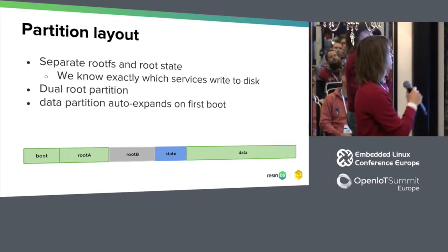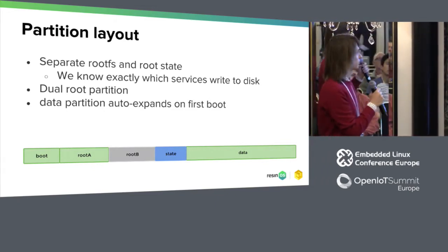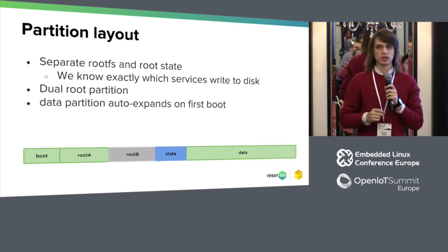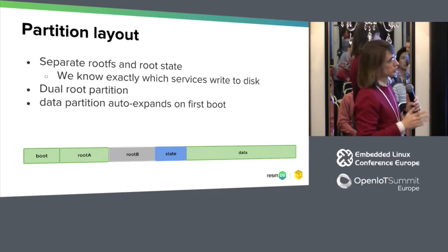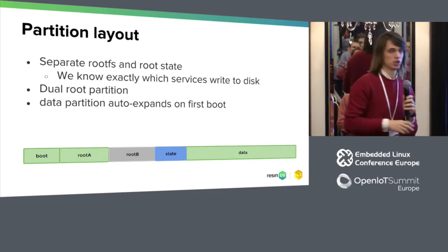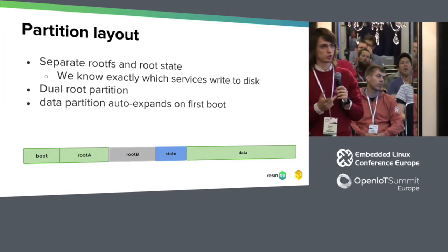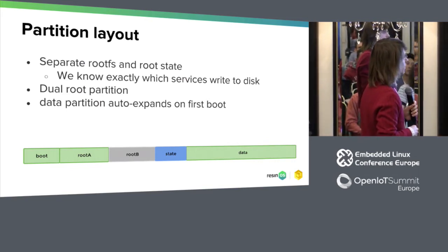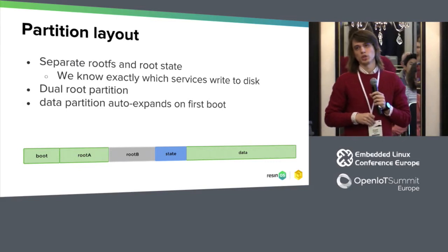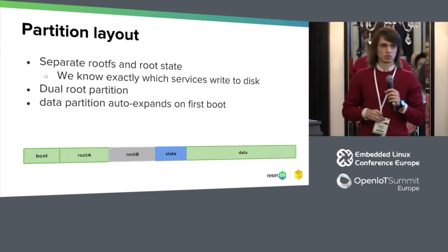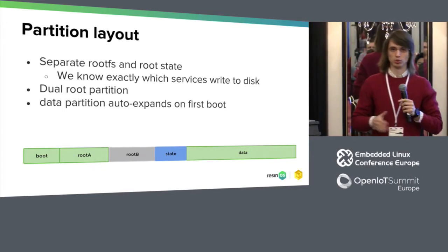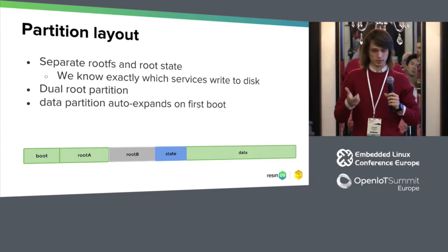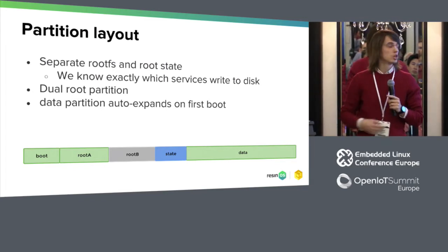Partition layout: we use separate rootfs and root-state partitions so we can catch any writes to rootfs and know exactly which service is writing to disk. We have a dual root partition for updates — an A/B or blue/green mechanism. The data partition auto-expands on first boot, so you just burn what you need and on first boot it expands to the end of the disk. This is important because you don't always know what storage size you'll use.